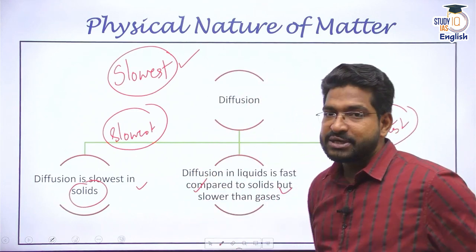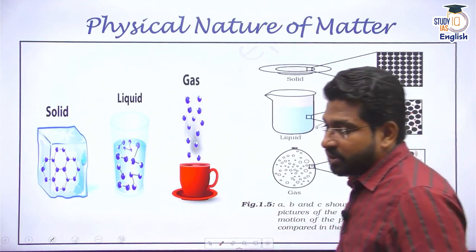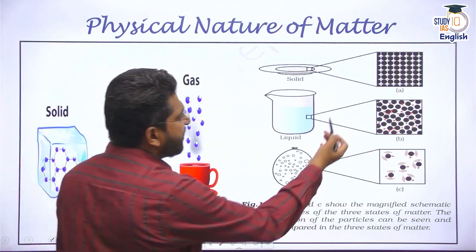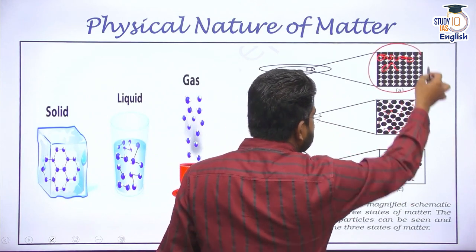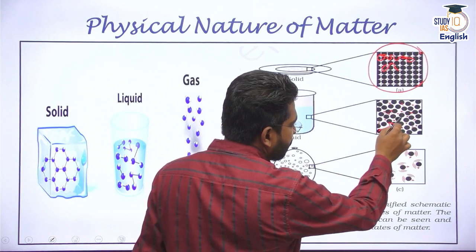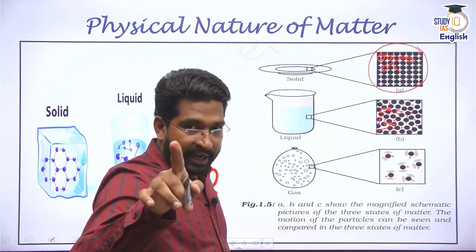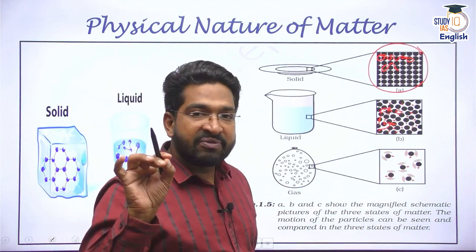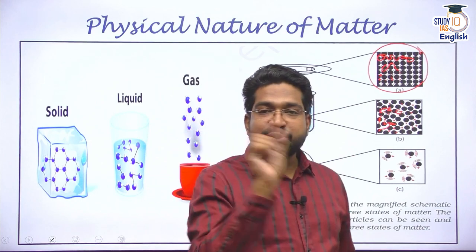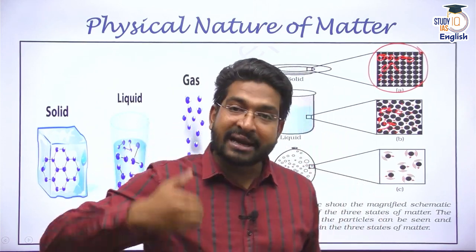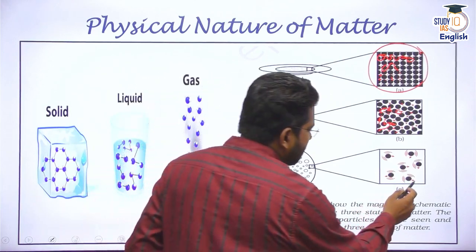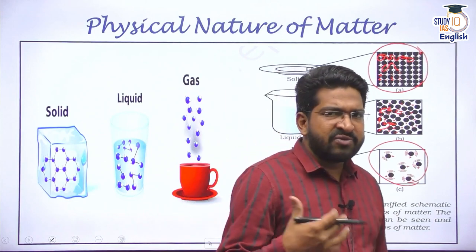Diffusion occurs in all three states. Now, what are the states of matter? Solids are matter in which the particles — atoms, molecules — are very closely bound together, which is why they are always in a definite shape. In liquids, molecules are free to move because there is a lot of space between them. Even in a solid there is always space between particles because atoms and molecules can vibrate — that is why heat is conducted and electricity is conducted. In gases, atoms or molecules are very loosely held together and free to move.